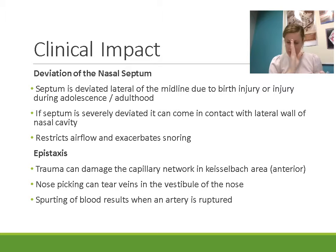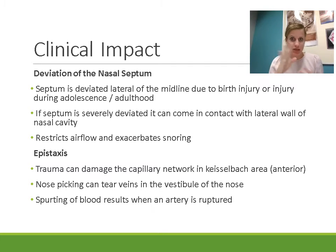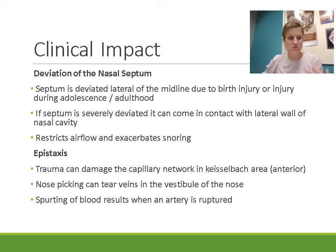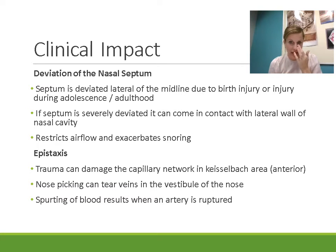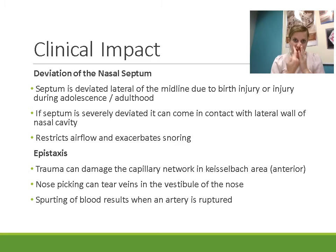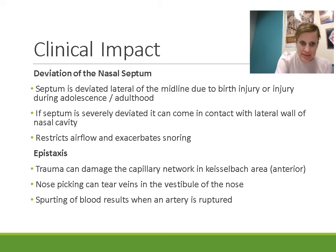The nasal septum can be deviated laterally to one side or the other. The septum is this cartilaginous wall that goes down the center and should be along the midline, but various things can cause it to deviate. Sometimes this is because of a birth injury — birth is a traumatic experience. It can also happen because of an injury during adolescence or adulthood. Sometimes we don't know why it happened, but it's relatively common. If the septum is severely deviated, it can come in contact with the lateral wall of the nasal cavity and restrict airflow on that side. When people have a deviated septum, they typically snore pretty loudly — the worse the deviation, the worse the snoring. Epistaxis is just a nosebleed.